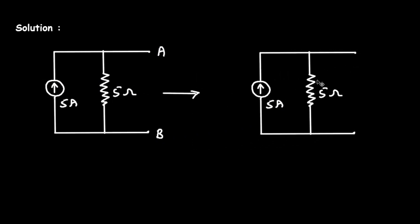So for that, what we have to do, we have to, first of all, here we can see the direction of this current source is upward. So what we will do, we will take this resistor at this position.